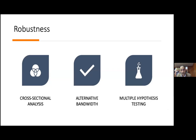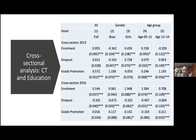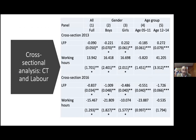Robustness checks: we use cross-sectional analysis for 2013 and 2016 to test robustness against the panel results, replicate results with alternative bandwidths of three and the optimal bandwidth, and apply multiple hypothesis testing to check for bias from testing multiple outcomes simultaneously. Results remain consistent with the main findings.